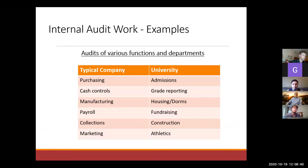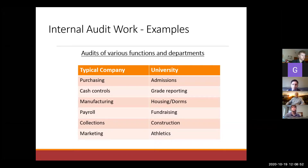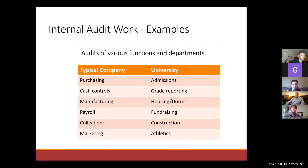At a university, there are a number of areas we can look at: admissions — getting into the university, there's a process, there are internal controls, all those things can be audited. Grade reporting, housing and dorms — we've had reviews where people were still in the dorm even though they weren't taking classes anymore, which became an audit finding. Also fundraising, construction, and athletics.